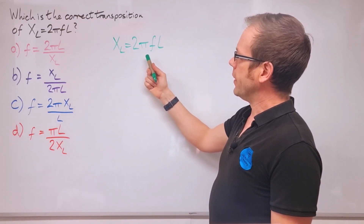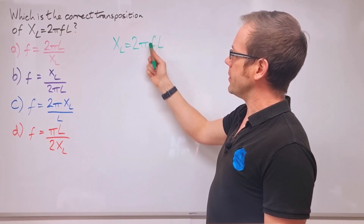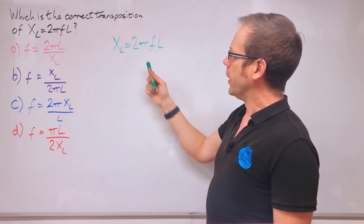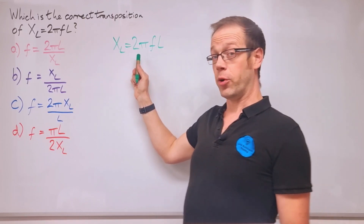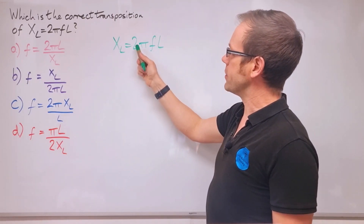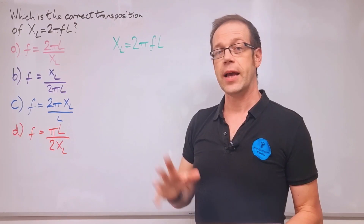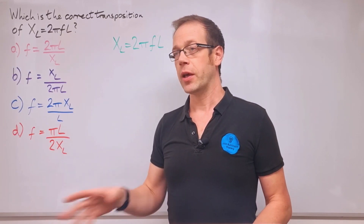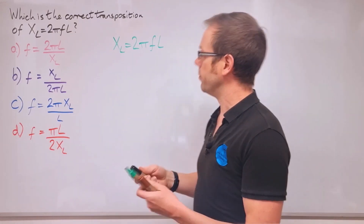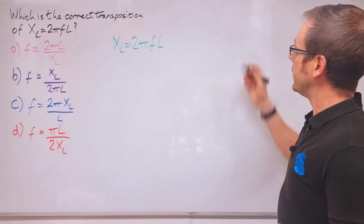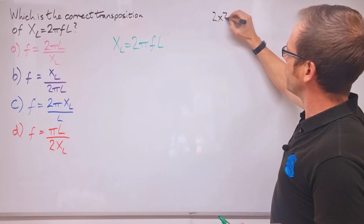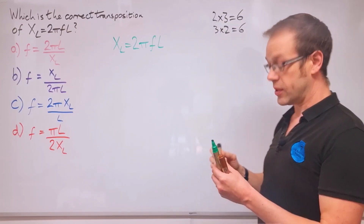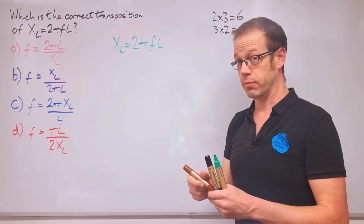The first thing I'd look at is: I'm trying to get this f out and get it by itself, but it's locked together with all these other things. This is a nice example because we can jumble this side up as much as we want and it won't make a difference. We've got two times pi times f times l. There's a law in maths that says it doesn't matter what order you multiply numbers in. Two times three gives six, and three times two also gives six.